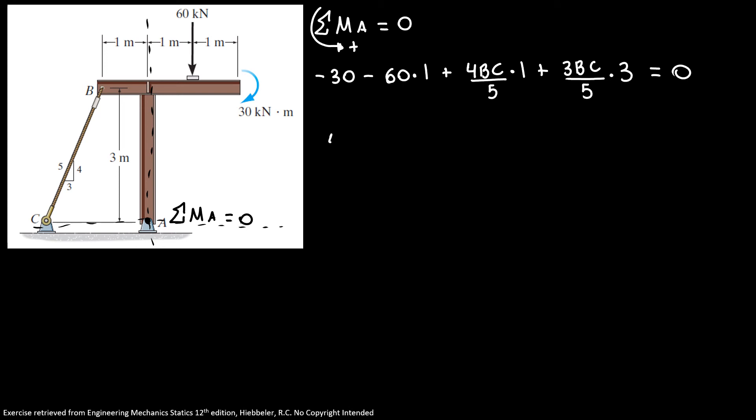So here I have 4BC over 5 plus 9BC over 5 equals 90. Here I have 13BC over 5 equals 90, so I have my BC is equal 34.6 kilonewtons.